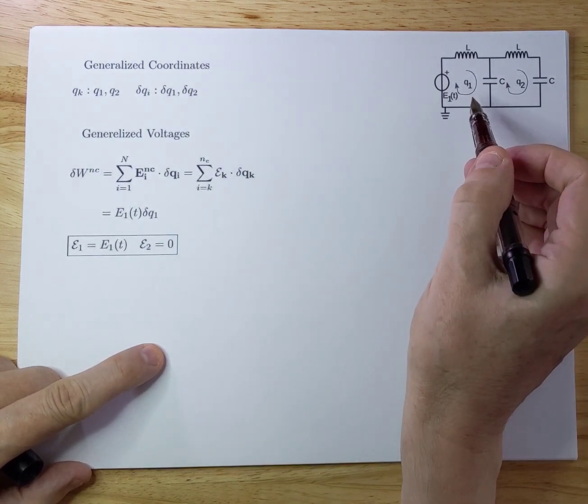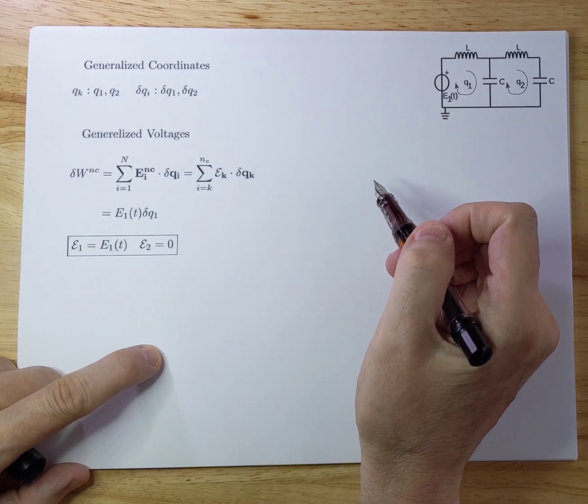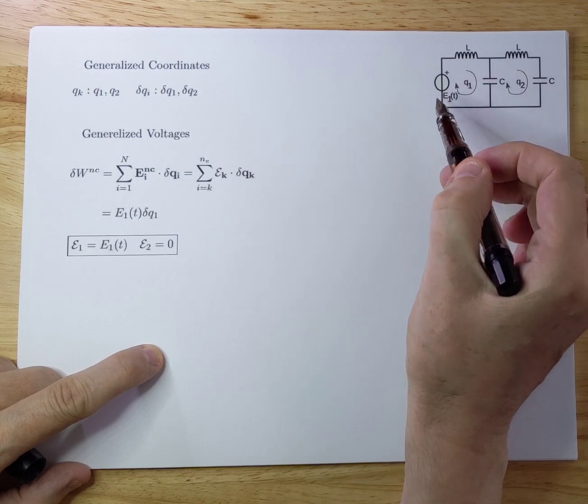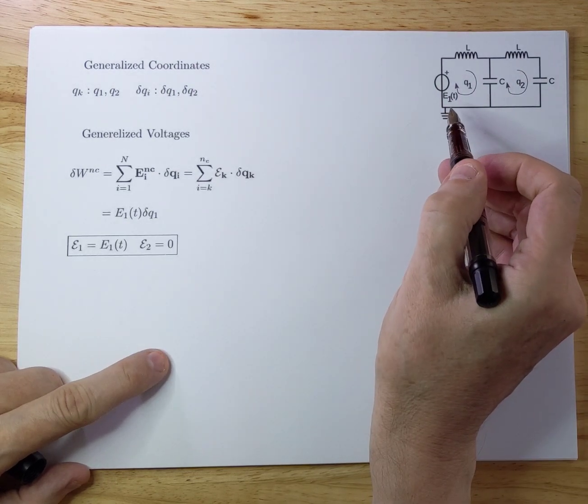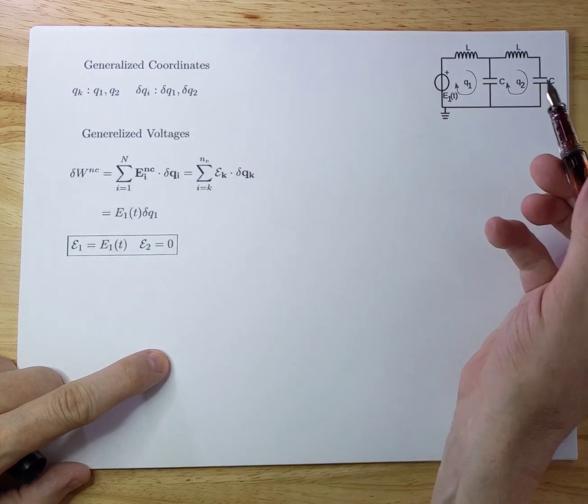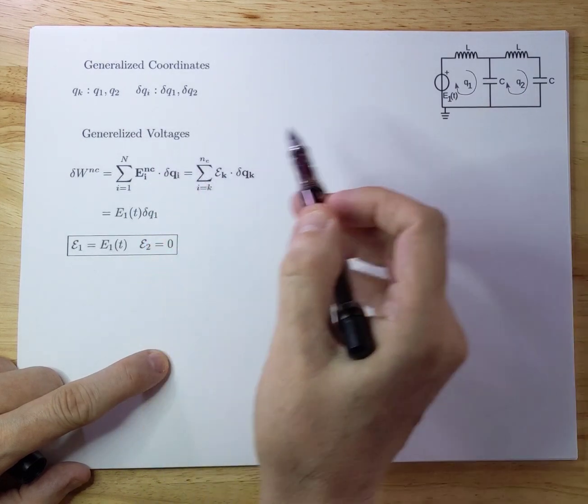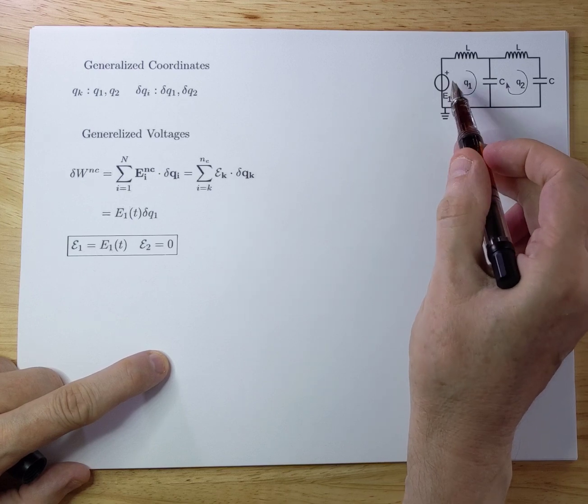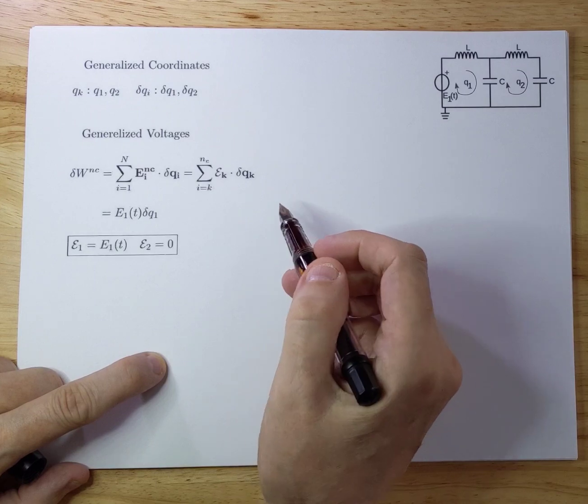The next step is generalized voltages. We need to analyze what the generalized voltages are. If we look at the schematics here, we only see that there is one generalized voltage, and that's the E1(t). If there would be resistors in here, we would also have to include those. But there are no resistors in the system. So we only have one power supply. In consequence, there's only one generalized voltage.